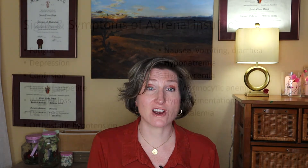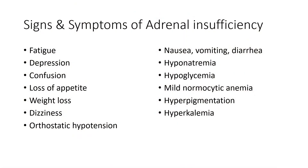In older adults, adrenocortical failure can mimic many other conditions. The symptoms are pretty nonspecific and can include things like fatigue, confusion, depression, and postural hypotension — which can have many causes in older adults — among other features.